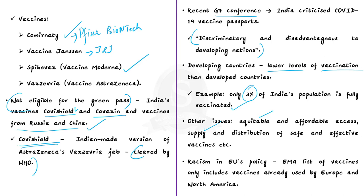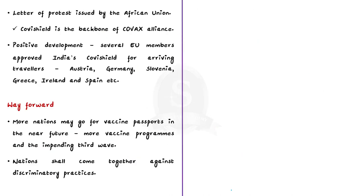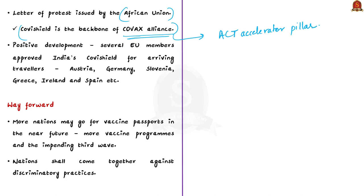The editorial author points to a hint of racism in the EU's policy, since the EMA's approved vaccine list only includes vaccines used by Europe and North America. The African Union issued a letter of protest stating that Covishield is the backbone of the COVAX alliance — one of the three pillars of the Access to COVID-19 Tools Accelerator — which ensures global access to COVID-19 vaccines. Yet despite this, Covishield remains excluded from EU recognition.